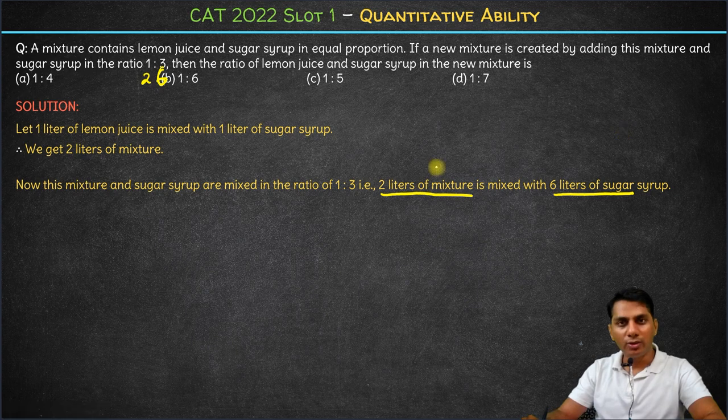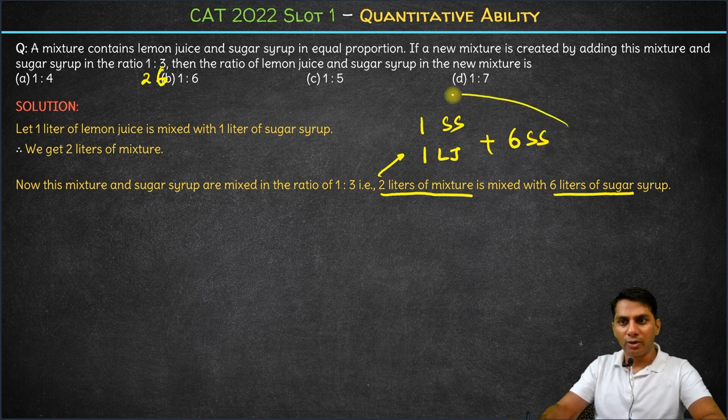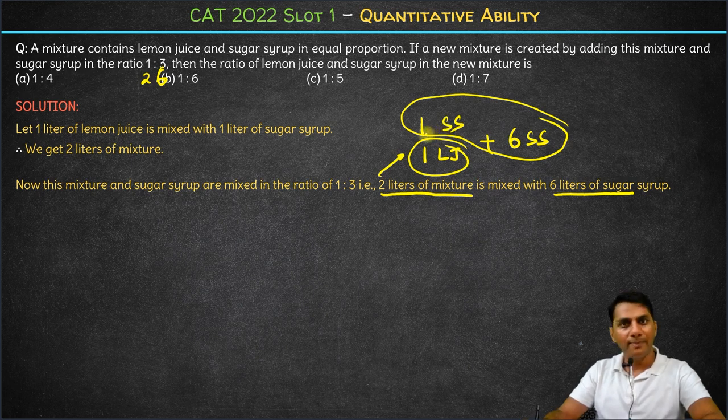So how much sugar syrup do we have? This 2 liter had 1 liter of sugar syrup and 1 liter of lemon juice, and this is mixed with 6 liters of sugar syrup. So the total sugar syrup that we will have is 7 liters and the lemon juice that we will have is 1 liter.